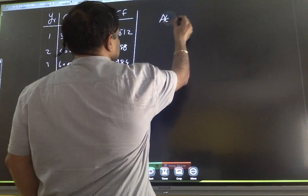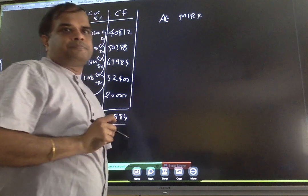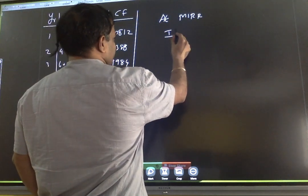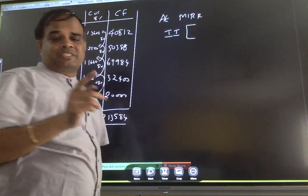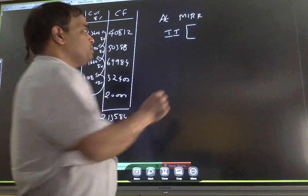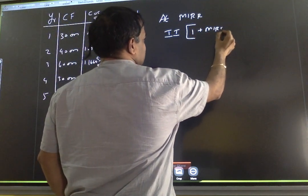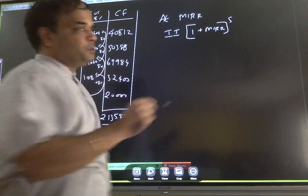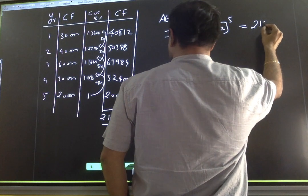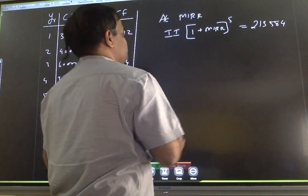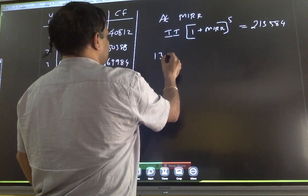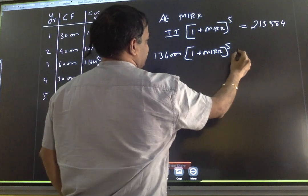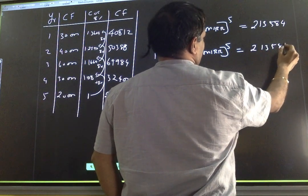Now, computation of MIRR. At MIRR, listen carefully. The initial investment into (1 plus MIRR) raised to the power of 5 years should equal the net terminal value result. That is: 1,36,000 into (1 plus MIRR) to the power 5 should be equal to 2,13,584.